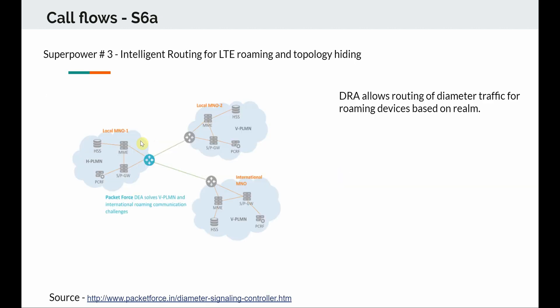To summarize, a DRA has three main use cases: intelligent routing for LTE roaming and topology hiding; AVP manipulation for interoperability between different vendors; and making the network more scalable by introducing load balancing.